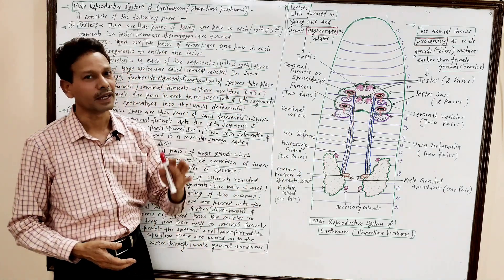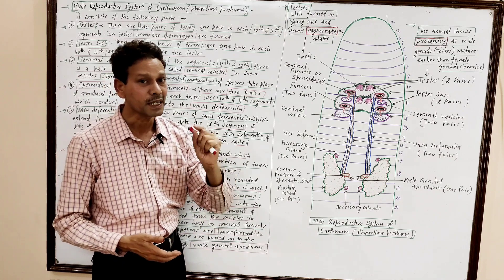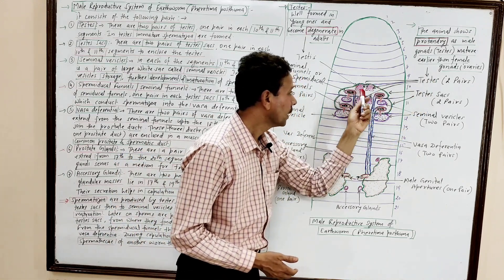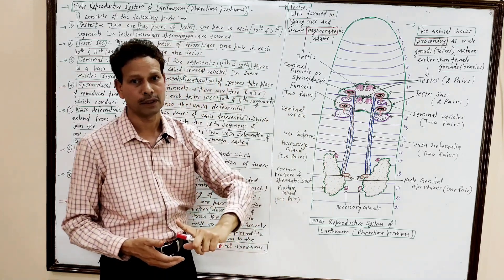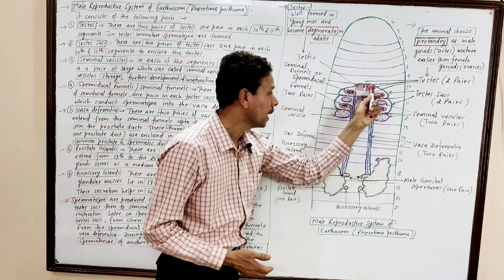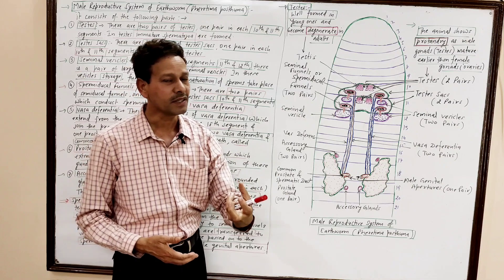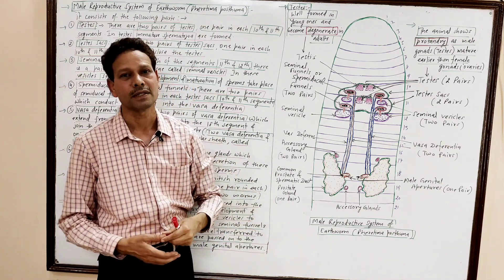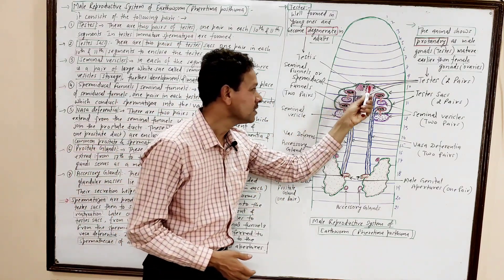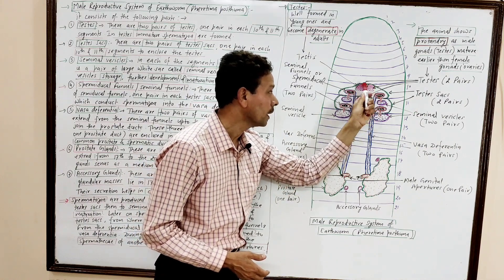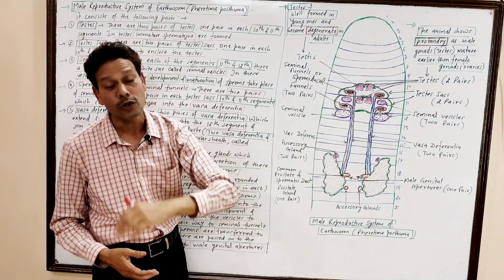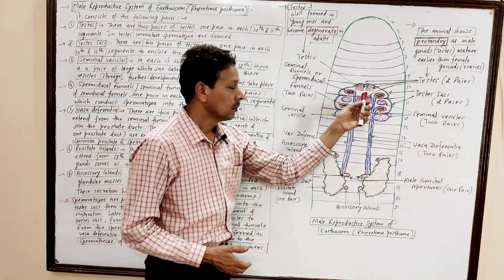There are two pairs of testes in case of Arthvom. One pair of testes is in segment number 10 and one pair in segment number 11. In these testes, the process of spermatogenesis, meaning the formation of spermatozoa, takes place. Mature spermatozoa are formed in testes present in segment numbers 10 and 11.